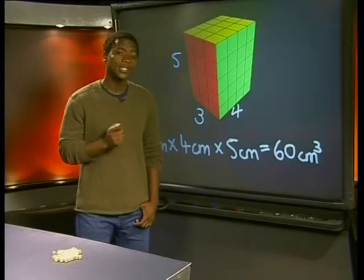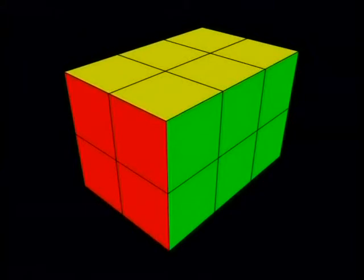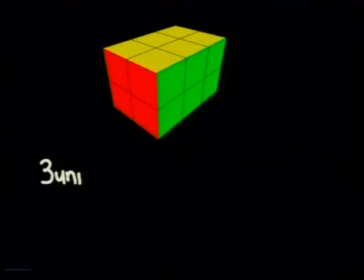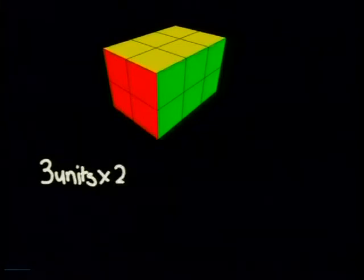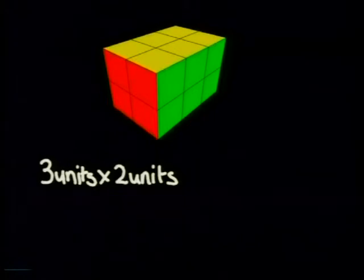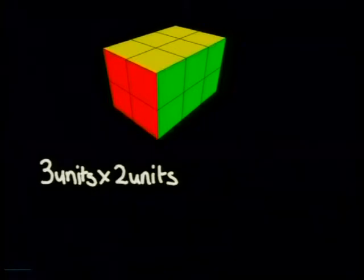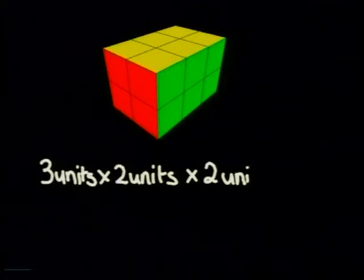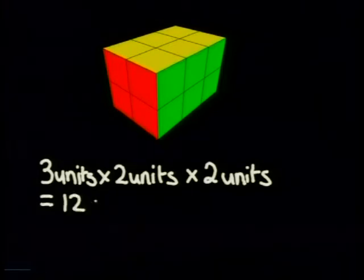Let's see if you can use this knowledge of volume to answer a few questions. Look at the diagram of this box. What is its volume? Did you get 12 cubic units? The base is 3 units multiplied by 2 units, and since we're calculating volume, we multiply by the height, which is 2 units, which gives us 12 cubic units.